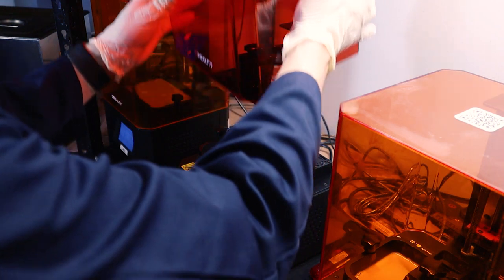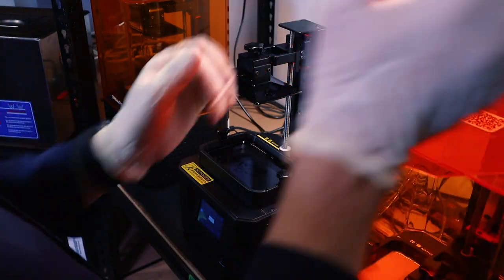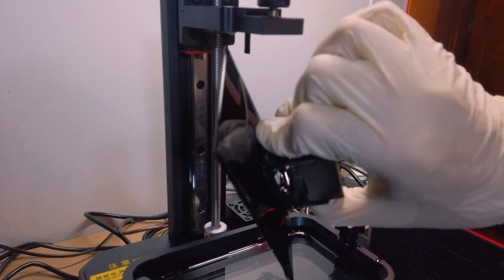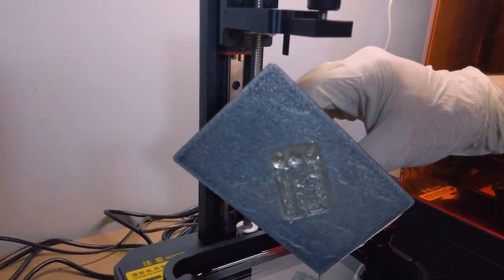Okay now that the Monocure 3D test model is completed we can remove it from the printer just by loosening the screw and taking the plate off. Just let that drip.